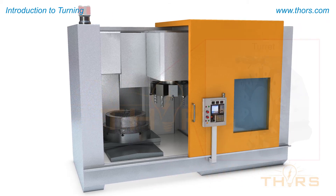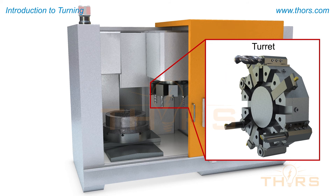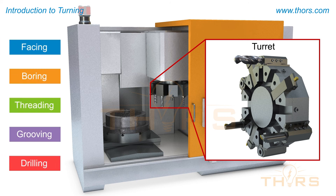Across from the spindle is the turret. The turret houses multiple cutting tools of various types. With several cutting tools available, the turning center is able to perform a series of different operations such as facing, boring, threading, grooving, and drilling.